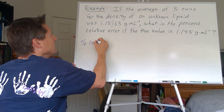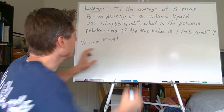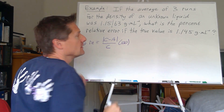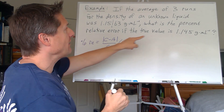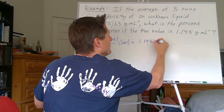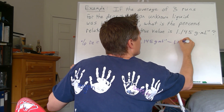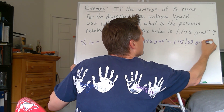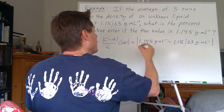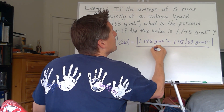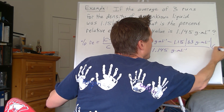Write down the equation: percent relative error = |C − A| / C × 100. Plug in the values: |(1.145 g/mL) − (1.1563 g/mL)| divided by 1.145 g/mL, times 100. That's the true value minus your average, absolute value of the difference, divided by the true value, times 100.